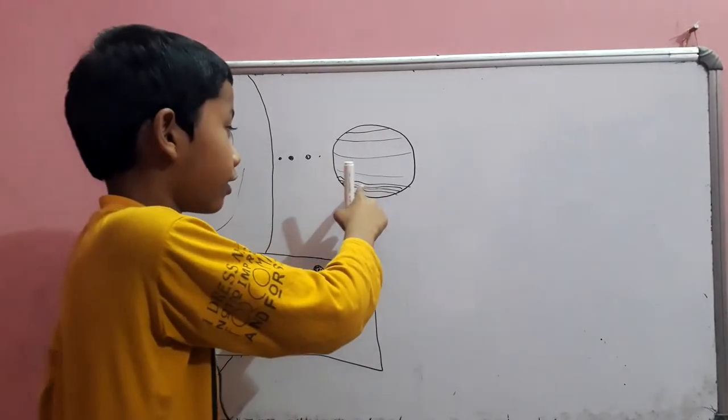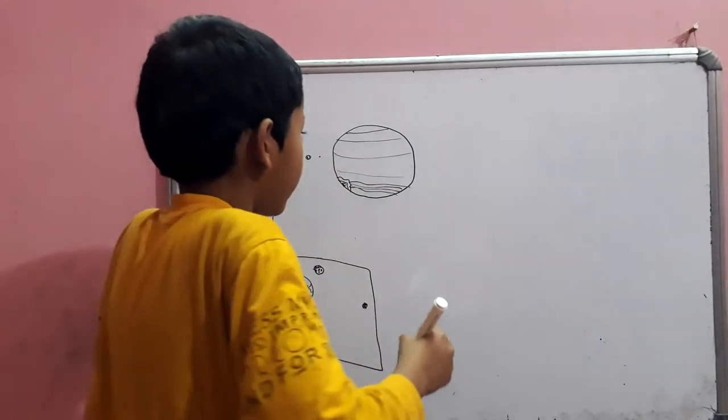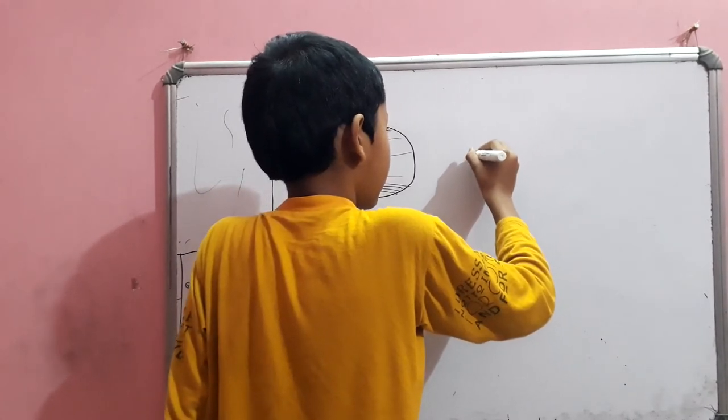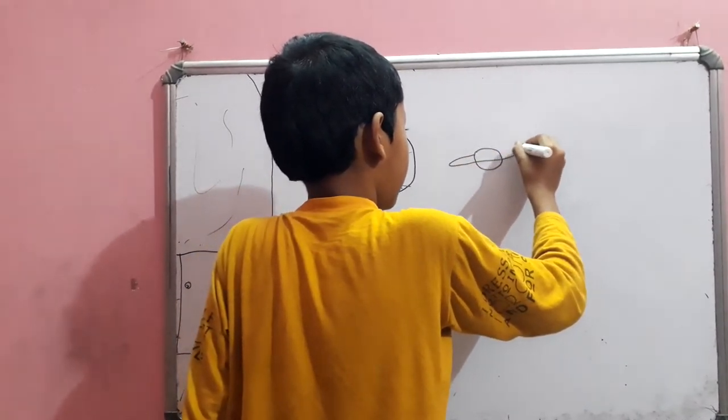And then, there is also a line. It is the wind. So, this is Saturn.